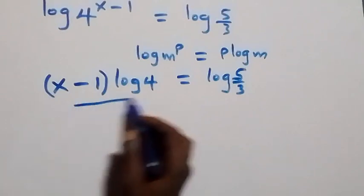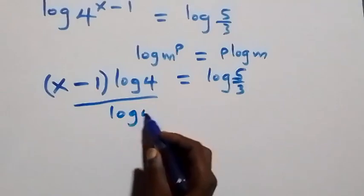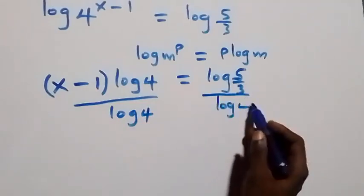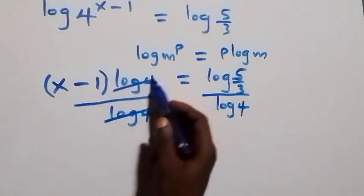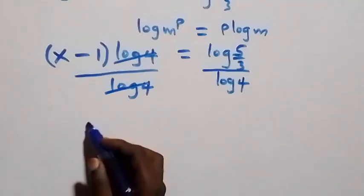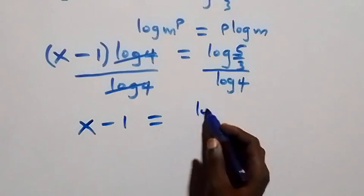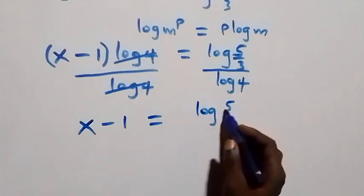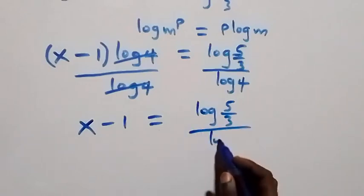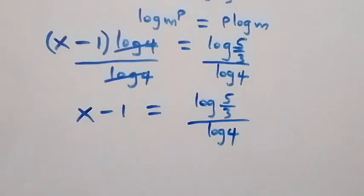We divide both sides by log 4 — log 4 cancels — and we are left with x minus one equals to log(5/3) divided by log 4.